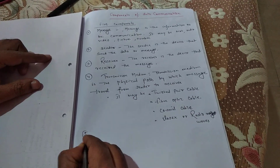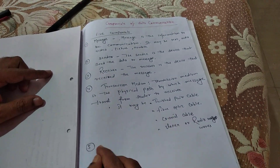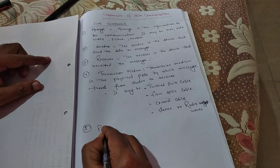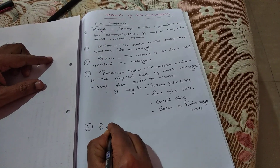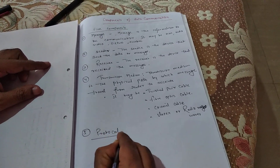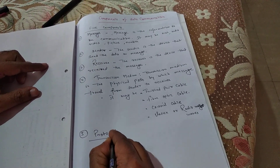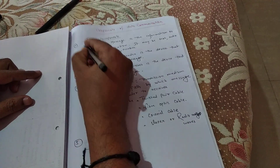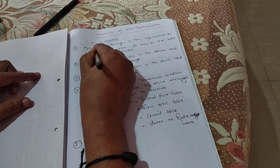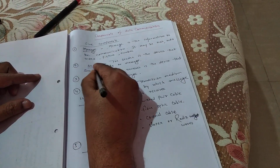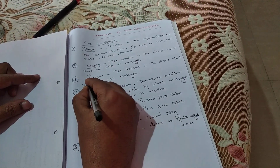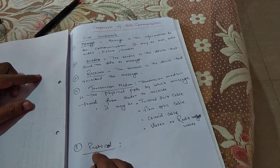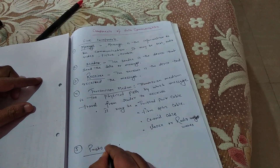The fifth component is protocol. To recap: the five components are message, sender, receiver, transmission medium, and protocol.